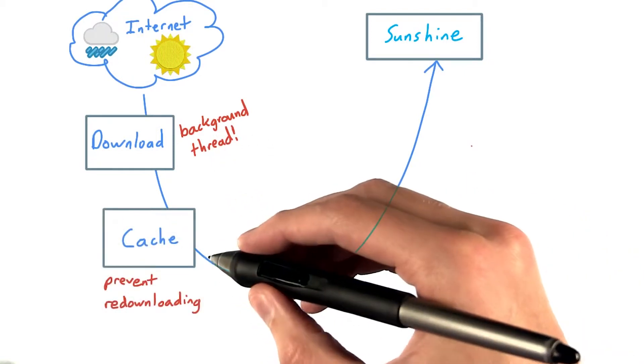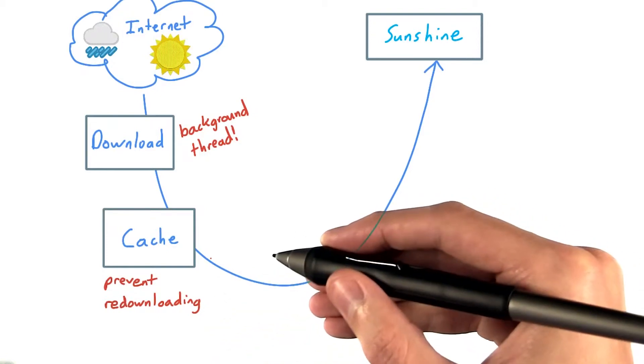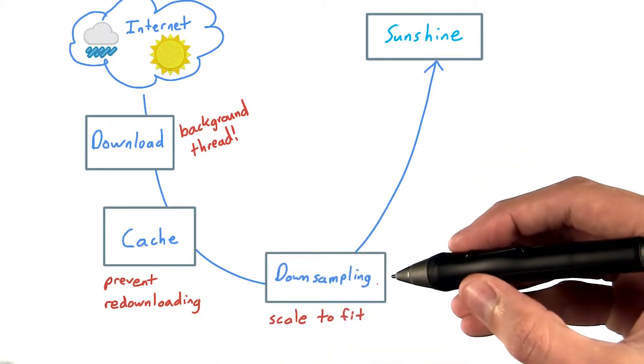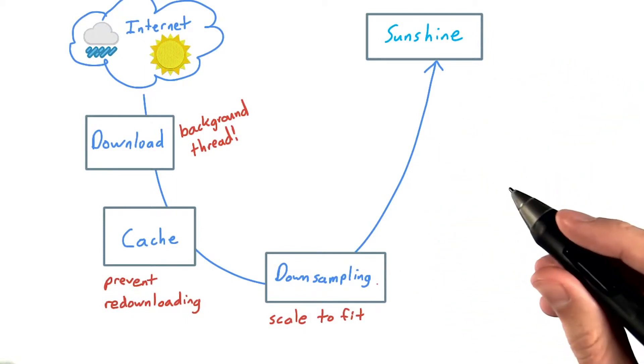You probably want to cache the images locally to prevent unnecessary repeated downloading. Oh, and downsampling and decoding. Doesn't make sense to load giant images just to display tiny icons.